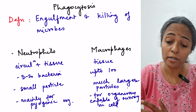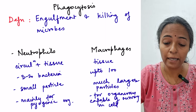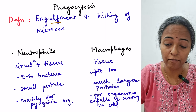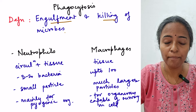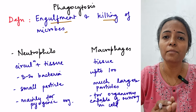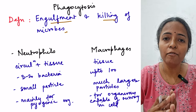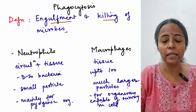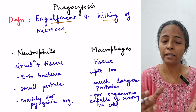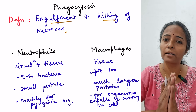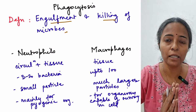Phagocytosis is a process defined as engulfment and killing of microorganisms. Engulfment means picking up the microorganisms, and then the microorganisms have to be killed.